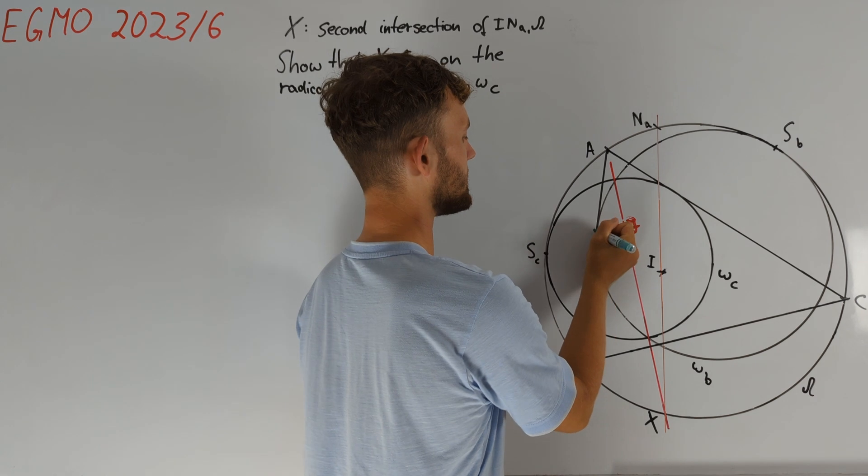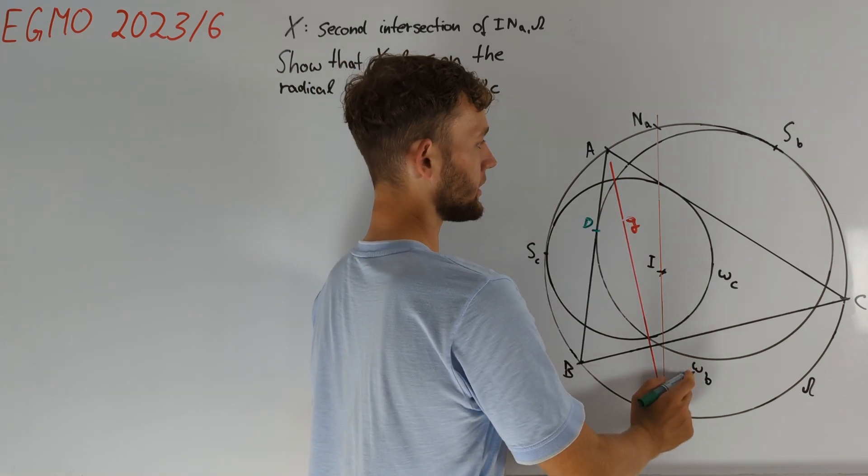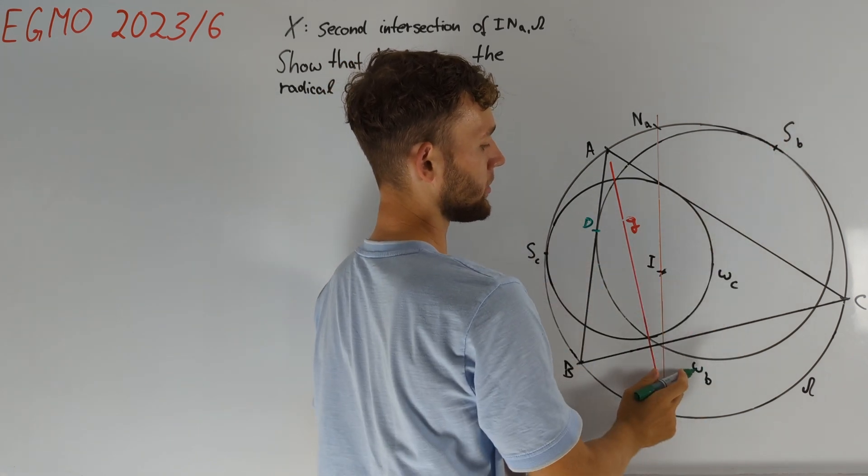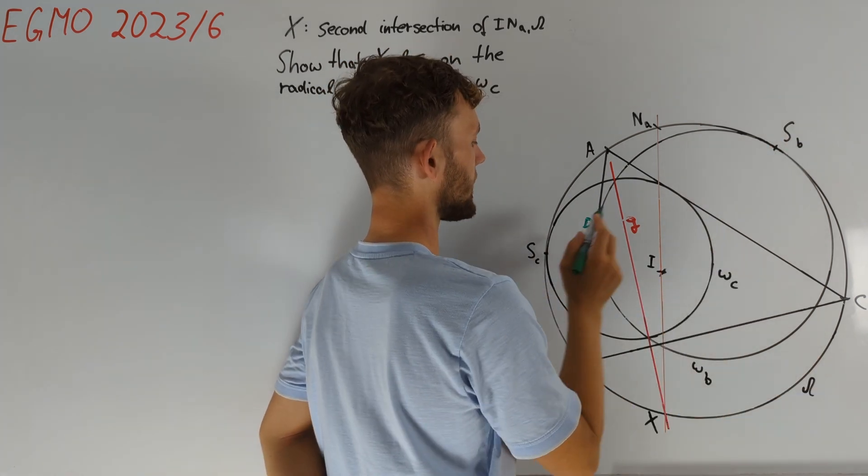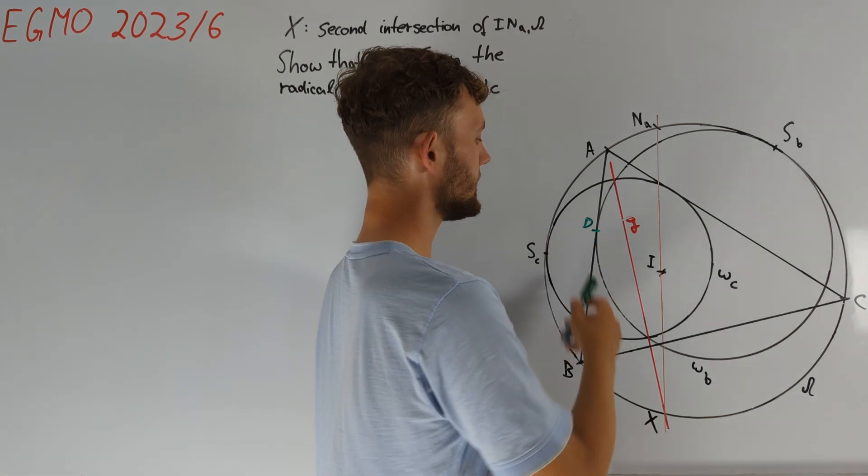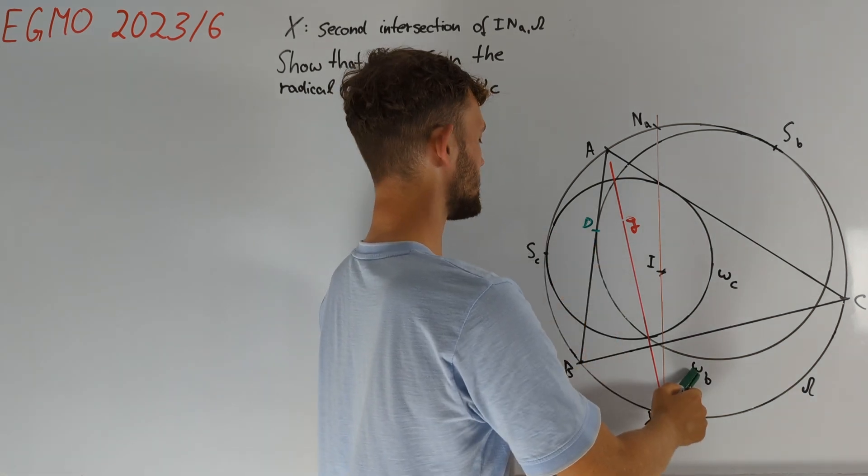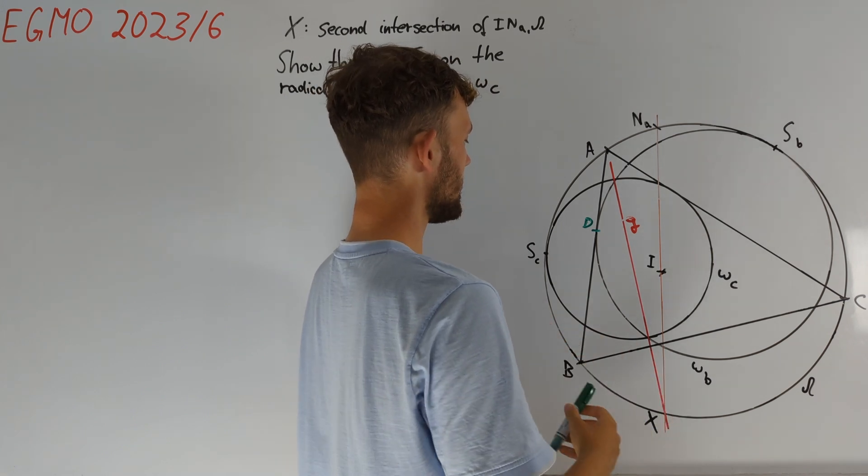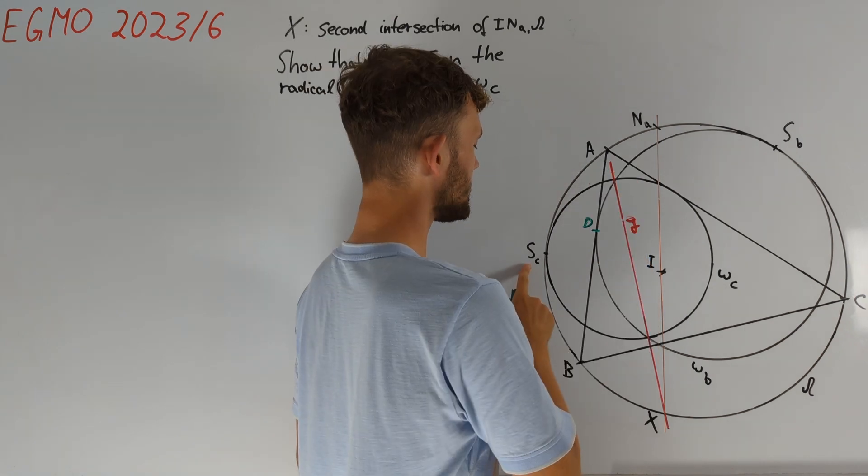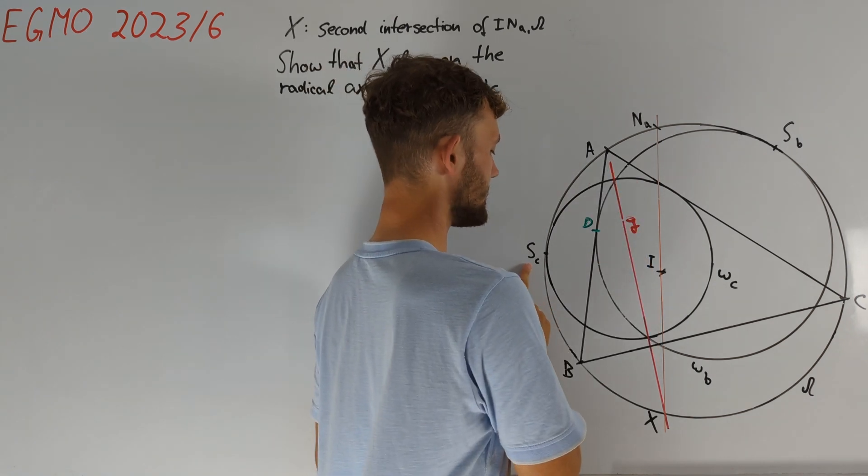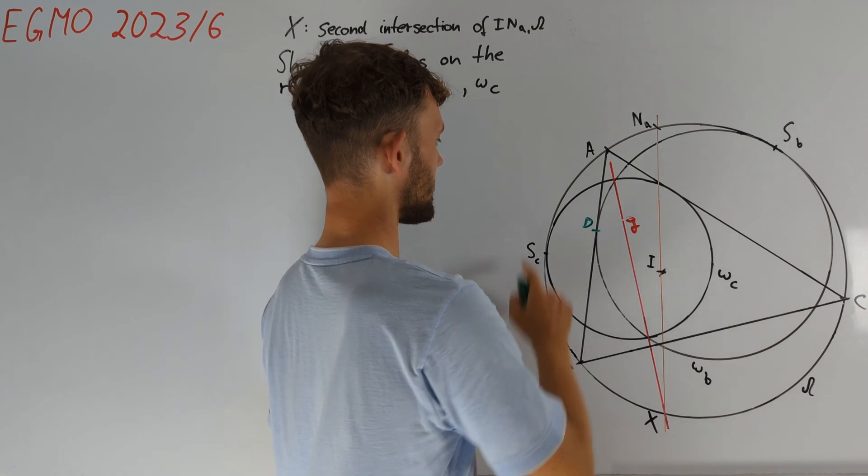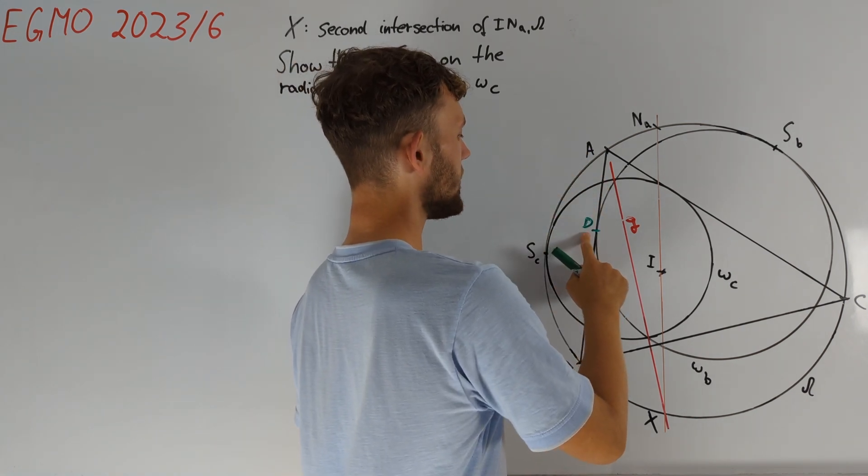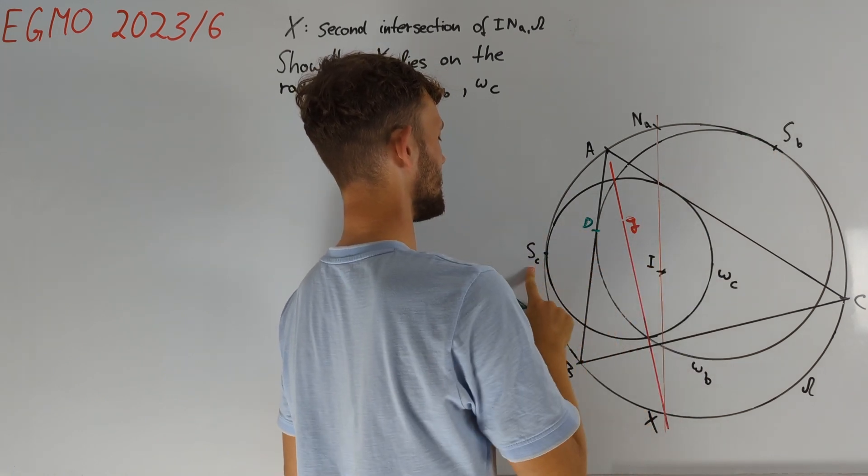Let us call this tangency point D. When dealing with omega_B, it is a good idea to consider the homothety at SB that sends the circle omega_B to omega. The question now becomes to find the image of D under that homothety. Since D lies on omega_B, its image is on omega, and moreover the tangent of omega at the image of D is parallel to AB. Both properties are satisfied by SC, which is moreover the only point on that arc with the property, and therefore we know that SC is the image of D, which implies that SB, D, and SC are collinear.